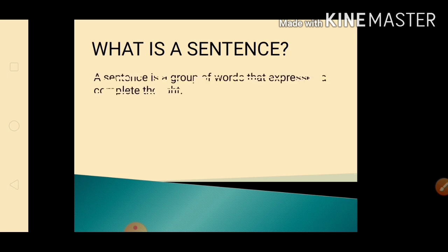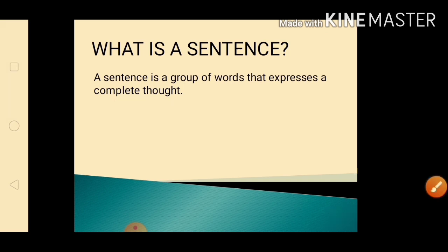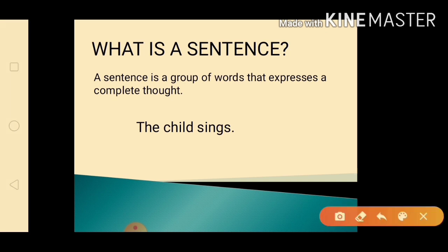So when we talk about sentence, a sentence is a group of words that expresses a complete thought. Now, I have here an example. We have the child sings. So, this example given is what we call sentence. It is because we have the subject and the verb.